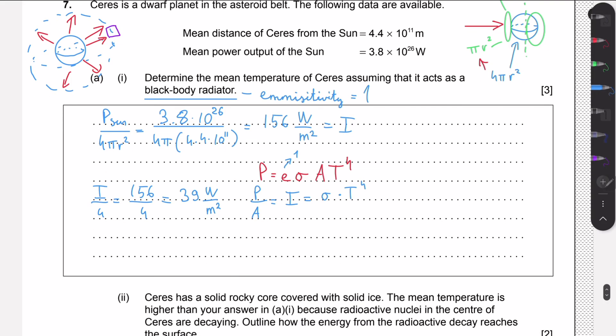All we need to do now is to rearrange for T and take the fourth root. So that's going to be I over sigma to the fourth root. This is going to be the fourth root of 39 divided by 5.67 times 10 to the minus 8. This will be approximately 160 Kelvin. This is going to be the mean temperature of Ceres.